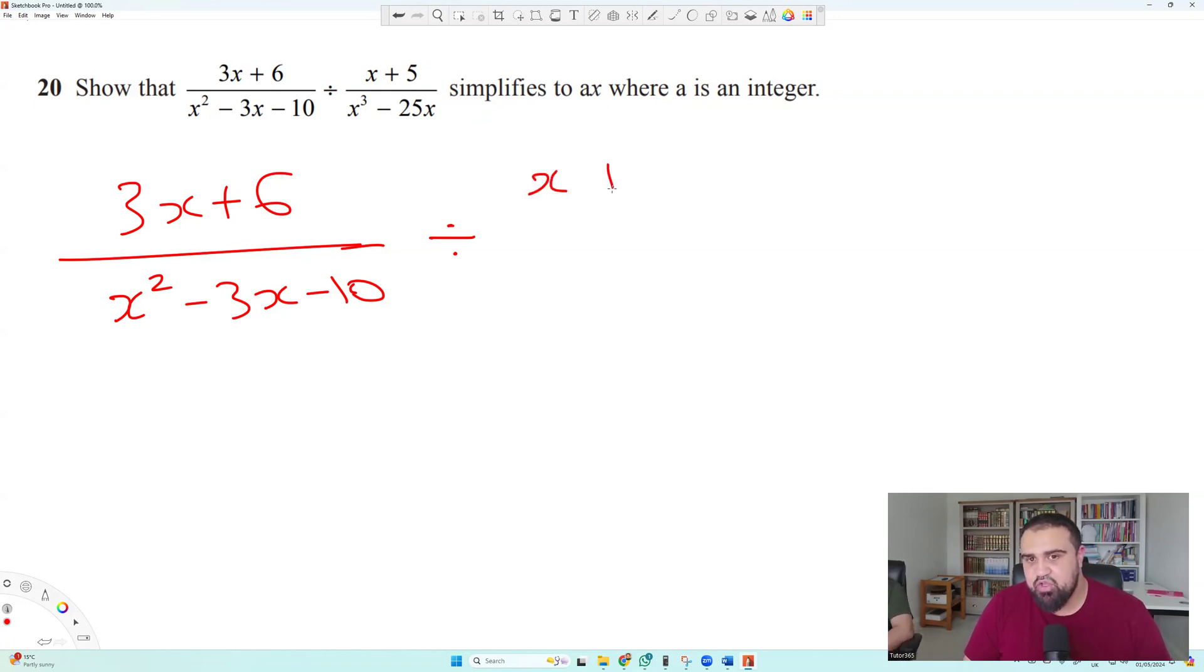Now, I've just written down the question so far. You've got x plus 5 over, now look at this. If you factorize the bottom, the denominator here, and just put out x as a factor, you've got x, open bracket, x squared, minus 25. Now, you see what we have here is the difference of two squares. And we can do x and open bracket, x plus 5, x minus 5. Exactly. So a squared minus b squared is equal to a plus b, a minus b.